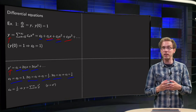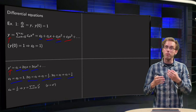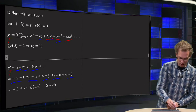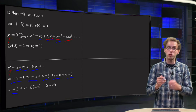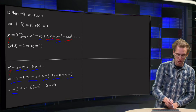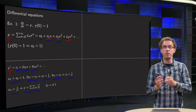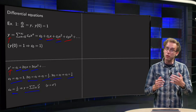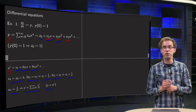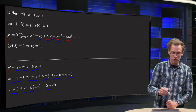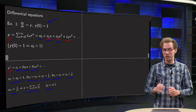You can recognize the pattern: c_n equals 1 over n factorial. This means the full power series solution is y(x) equals the sum from n=0 to infinity of x^n divided by n factorial — and of course you recognize this as the Taylor series of the exponential function. That makes sense, because the solution of this differential equation is the exponential function.